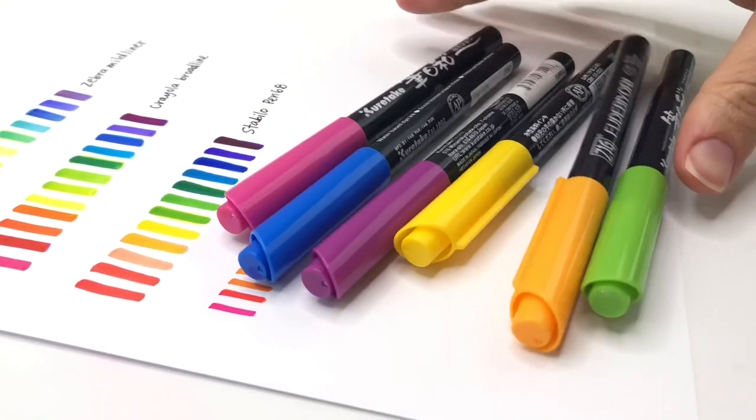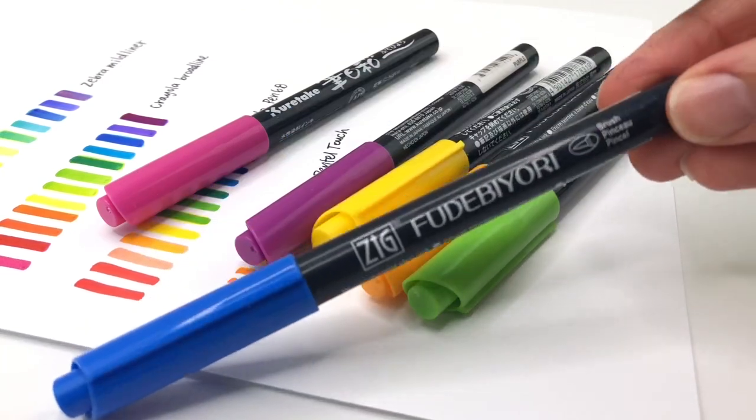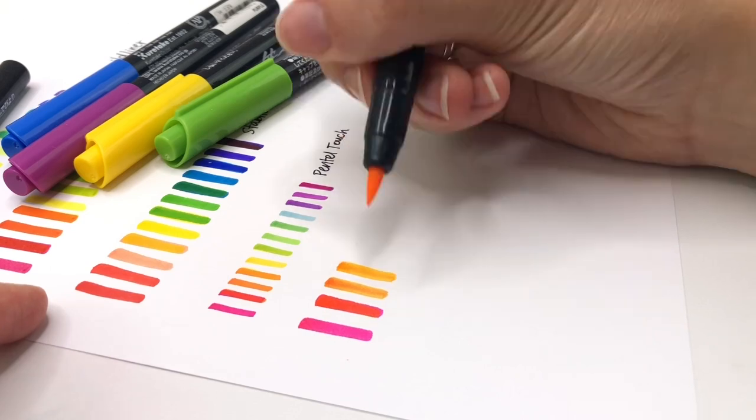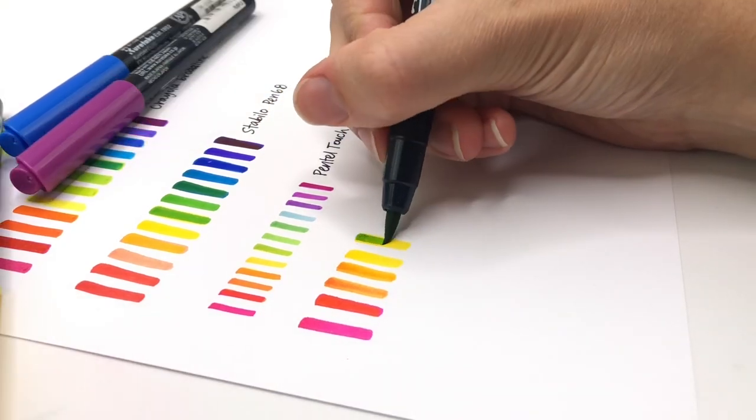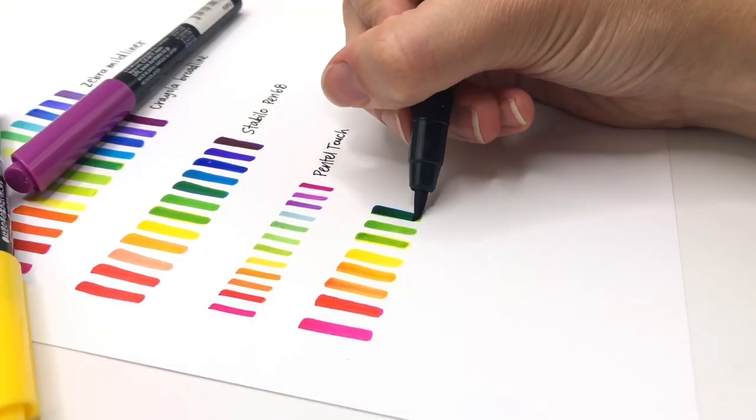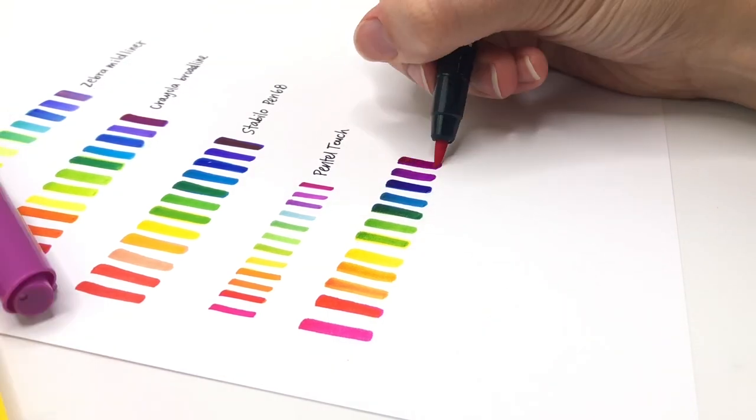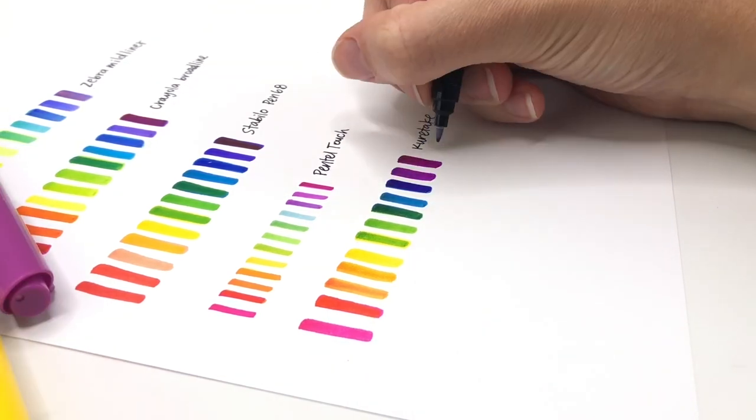And next is the Kuretake Zig Fudebiyori. I also really love these ones and I found pretty much the same thing. These all work except for the yellow doesn't work on the orange. The yellow of the Stabilo did work on the orange, but all the rest of them haven't.